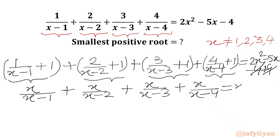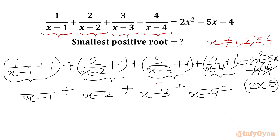From there we will take x common. In the bracket we need to write 2x minus 5. Now if I plug in x equal to 0, it satisfies our equation. So I will remove x from LHS and x from RHS and write 1. Therefore x equal to 0 is our first solution.